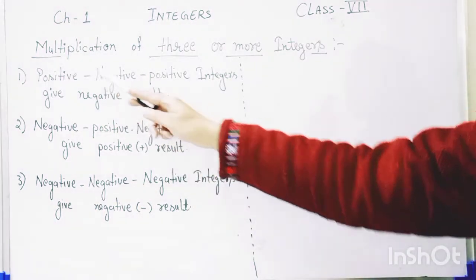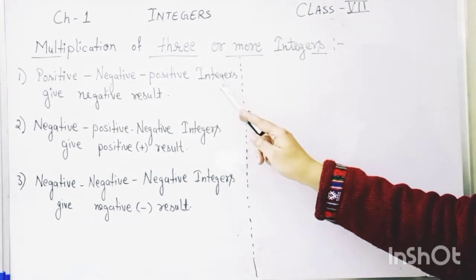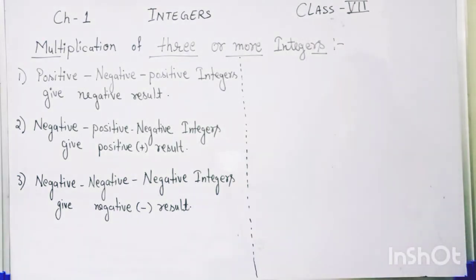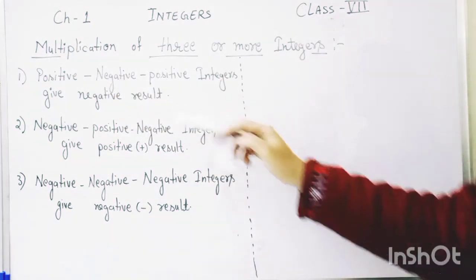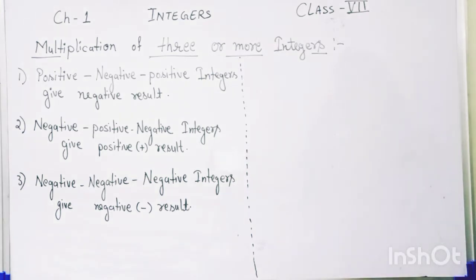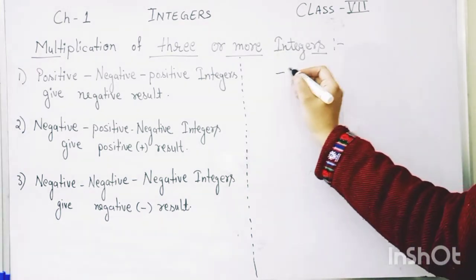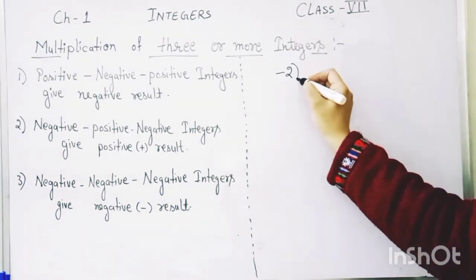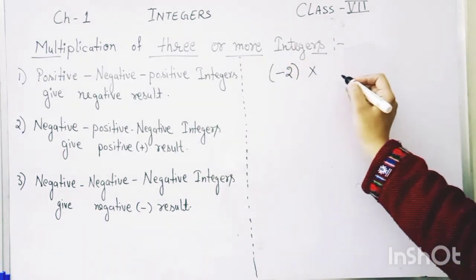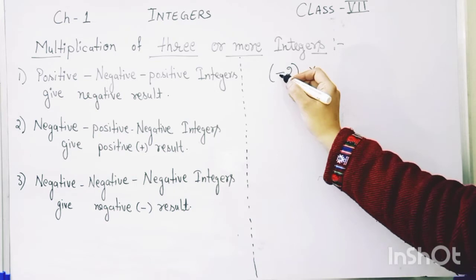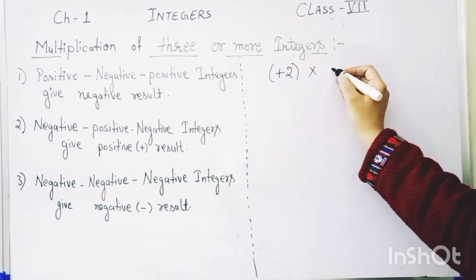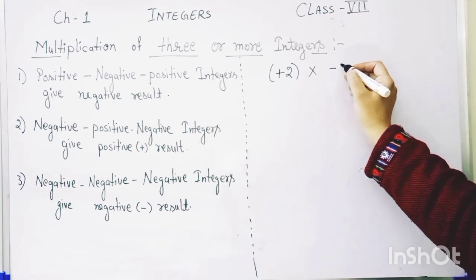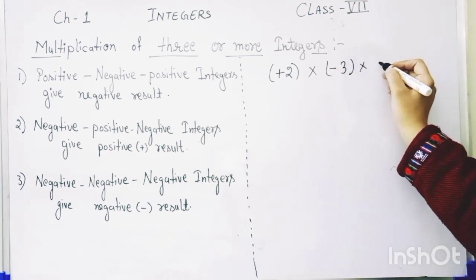The first rule involves positive, negative, and positive integers. If three integers have these signs, then the result will always be negative. Let's have an example: I am taking three numbers — the first one is minus two, multiplied by plus two. According to the first rule, we then have minus three multiplied by a positive number.